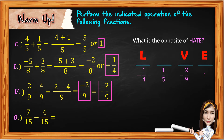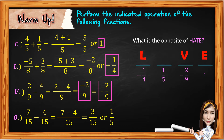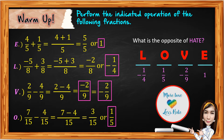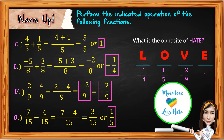For letter O, we have seven over fifteen minus four over fifteen. Subtract the numerators — seven minus four — then copy the common denominator fifteen. Seven minus four equals three over fifteen. Three and fifteen share a common factor of three, so three divided by three is one, and fifteen divided by three is five. The lowest term is one over five. We write O above one over five. So the opposite of hate is LOVE. More means we're going to add, and less means we're going to subtract — we must share more love and less hate.